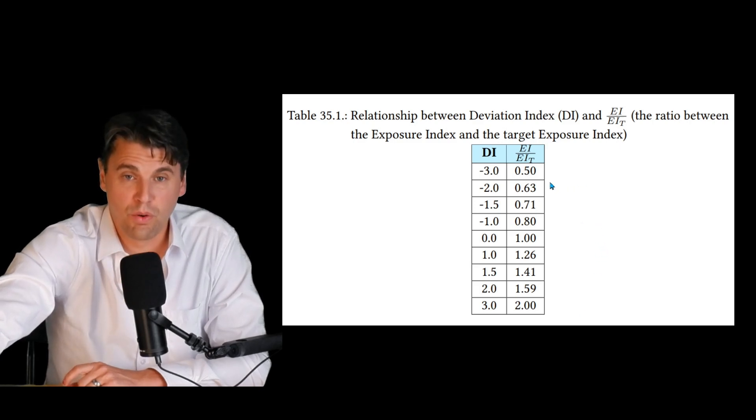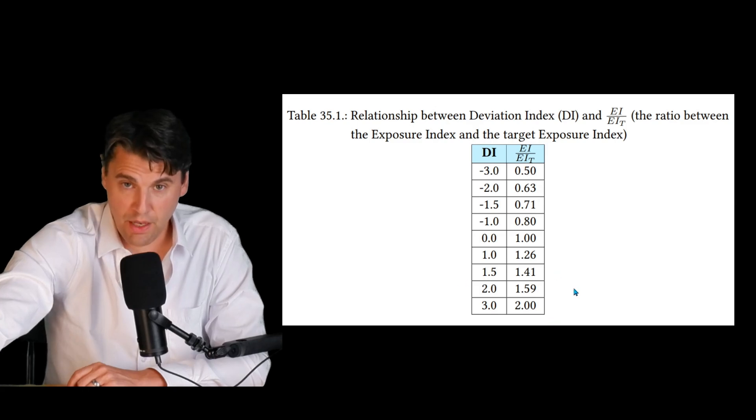If you're a factor of two less, you have half the exposure at the image receptor, that's a DI of minus three. And if you have a factor of two more, that's a DI of three. 40% too much is a DI of one and a half, for instance.